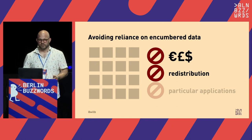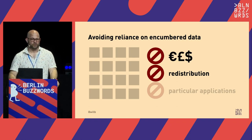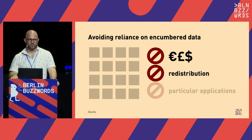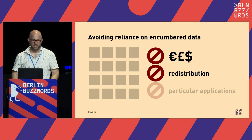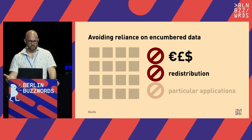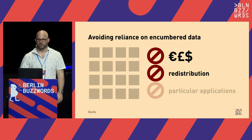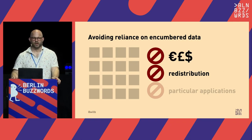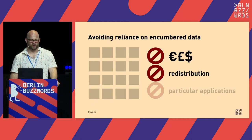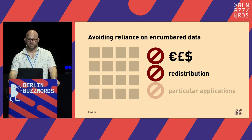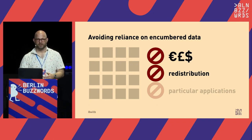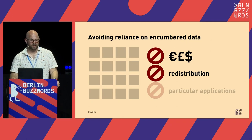Another problem with licenses that's a little clearer-cut is redistribution. Many datasets say you can download this and do whatever you want but you can't share it with anyone else. This makes it really difficult to release a system under a permissive open source license that depends on this kind of data. It also turns the original dataset into a single point of failure — how many times have you seen a GitHub repository or notebook that says 'start by downloading this dataset' and the dataset isn't there anymore?